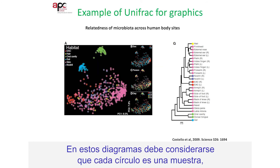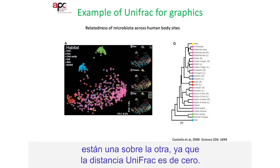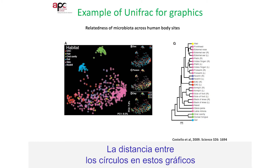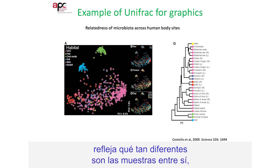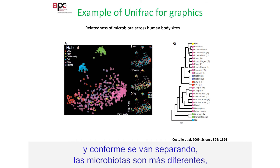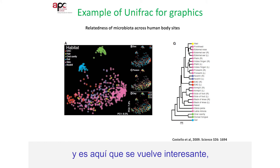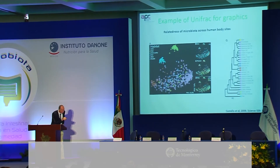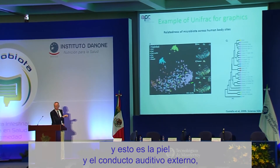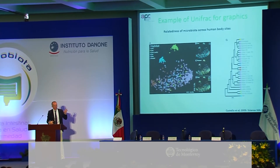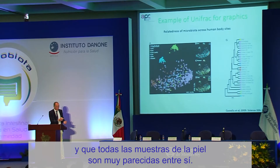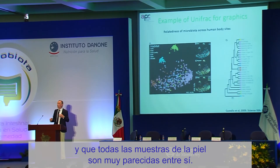In these PCoA graphs, the first thing to realize is that each circle is a sample. If two samples have the exact same microbiota, they're on top of each other because the UniFrac distance is 0. The distance between circles is a reflection of how dissimilar the samples are — as they get further apart, the microbiota is more dissimilar. When you impose a colour scheme — green for the oral cavity, blue for the gut, and another colour for skin and the external auditory meatus — you can see that the gut microbiota is different from the oral microbiota, whereas all of the skin-based samples are quite close to each other.